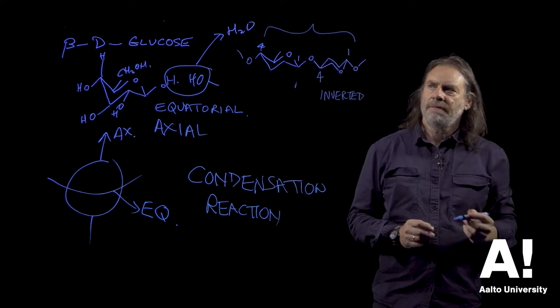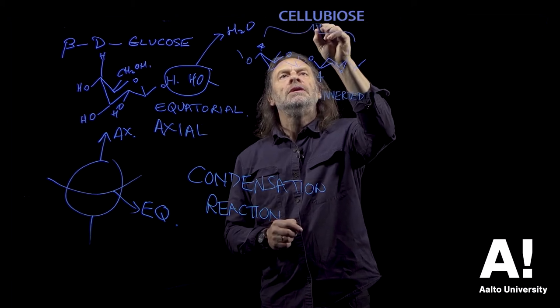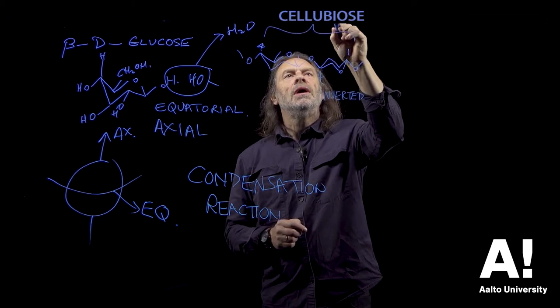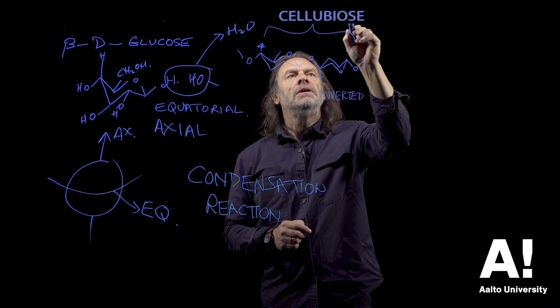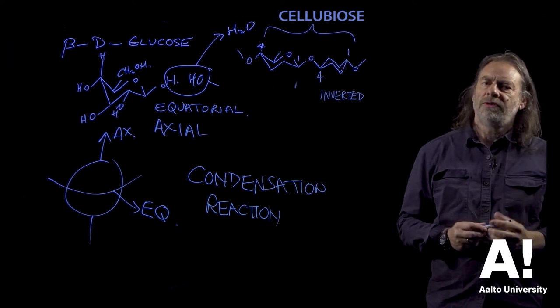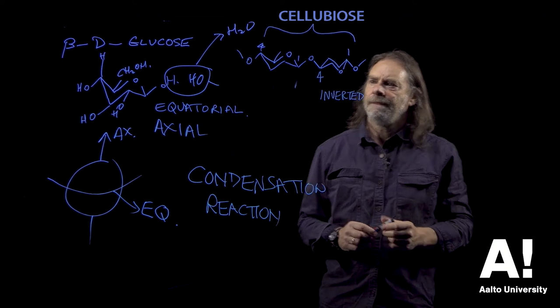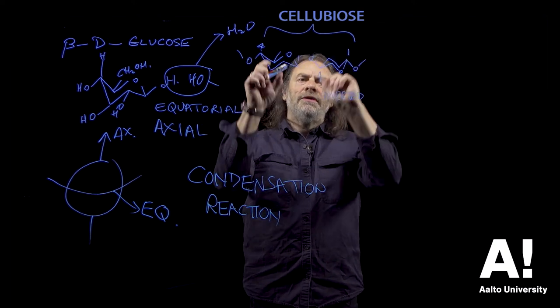Now you'll notice something about this molecule compared with that molecule. This molecule is inverted, and that unit which is two sugars joined together is referred to as a cellobiose unit. So that's the fundamental building block of the cellulose chain.